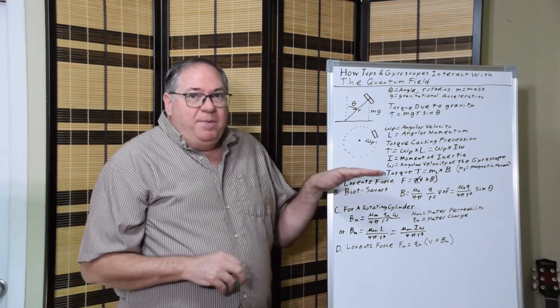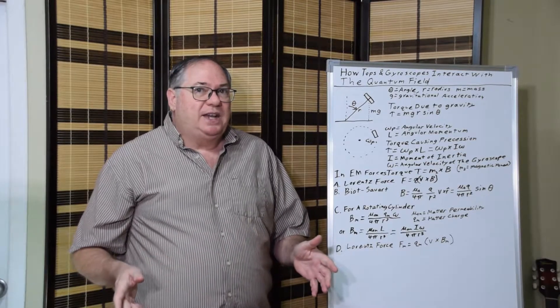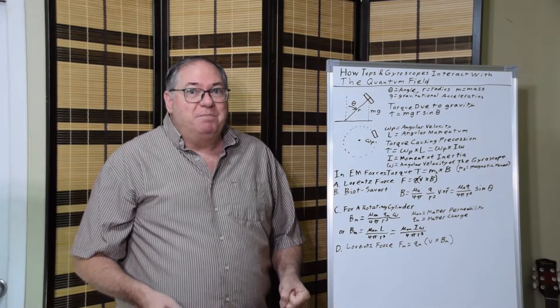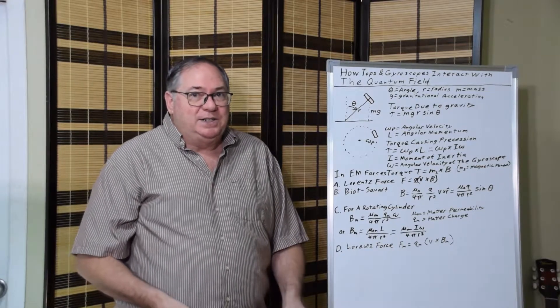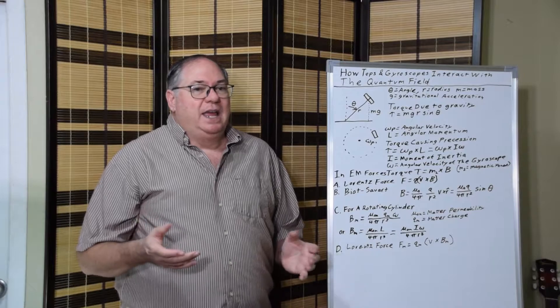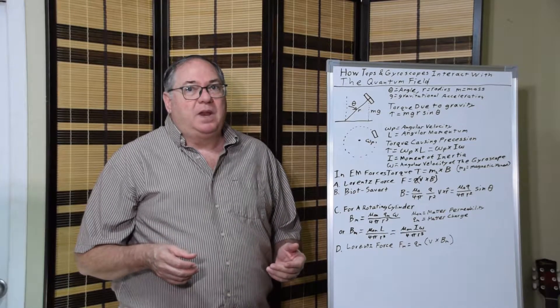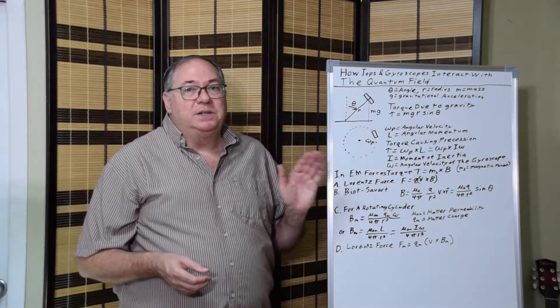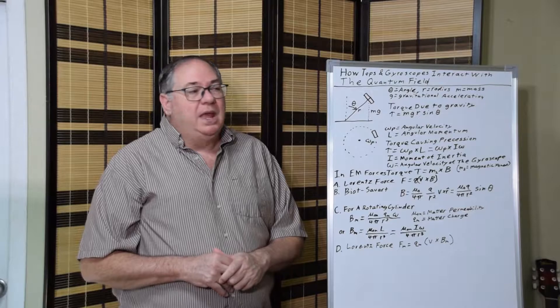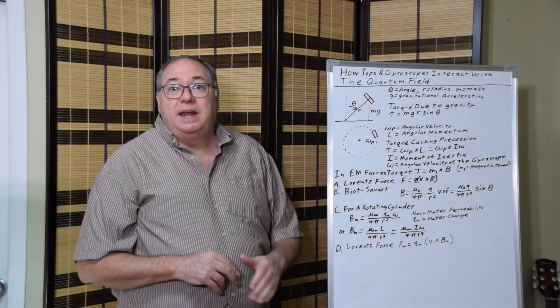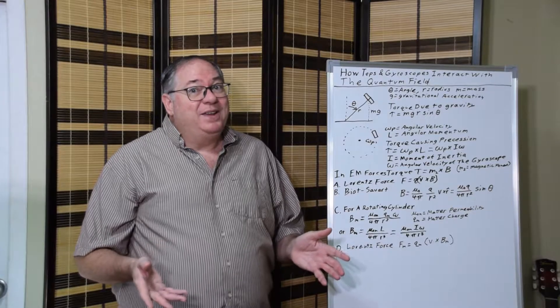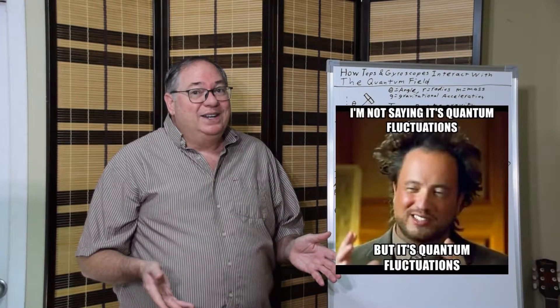The main problem with this is that physicists have the top or gyroscope pulling itself up by its own bootstraps. It's not pushing against anything. Nothing's pushing against it. It's just able to pull itself up from its own bootstraps because of this torque, which doesn't make any sense. If an object is moving, it's moving because it's being pushed by something. Tops and gyroscopes behave the same way in a vacuum as they do in air, so it's not the air. The only thing in the vacuum are quantum fluctuations, so it has to be quantum fluctuations.